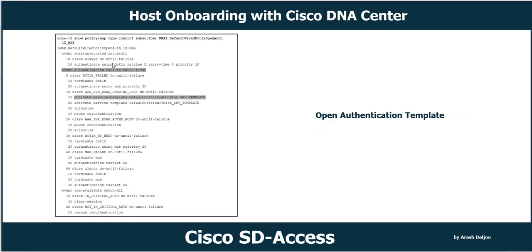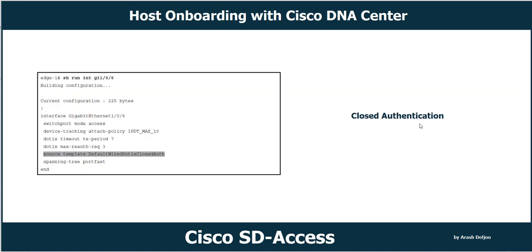The command 'show policy-map type control subscriber' followed by the policy name shows the complete policy map with events, class maps, and service templates. For example, in the highlighted section, the event is authentication failure. If the AAA server is down, the class is 'AAA server down and unauthenticated host', and the action is to activate the default critical authentication VLAN SRB template, which places the unauthenticated client in the critical VLAN.